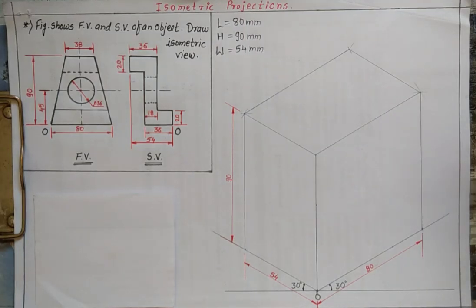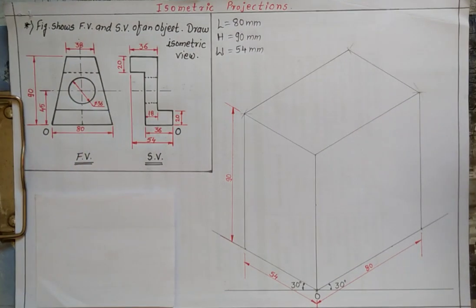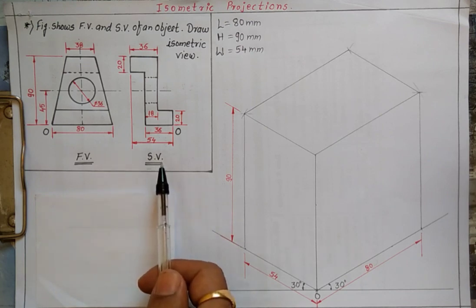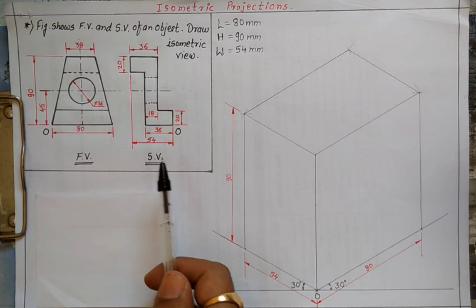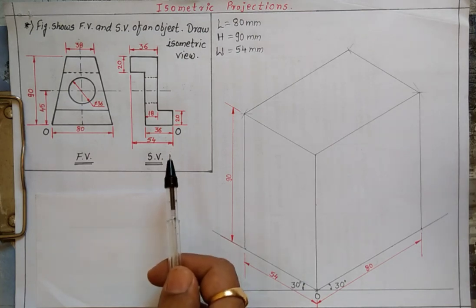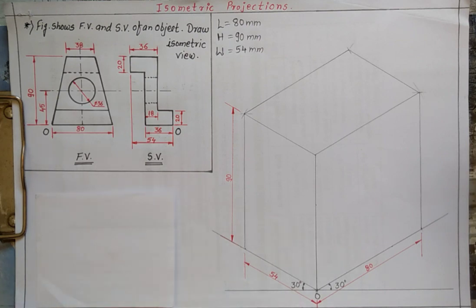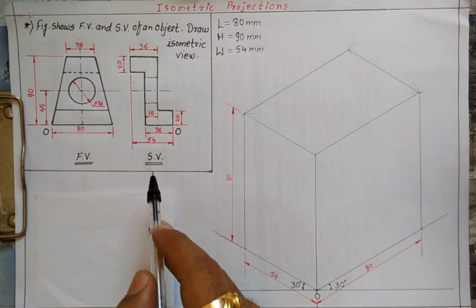Welcome to this session of engineering graphics. In this session we are going to solve one problem from isometric projection. The problem statement shows the front view and side view of an object, and we have to draw its isometric view. Here you have the front view of the object and to its right side there is the side view.